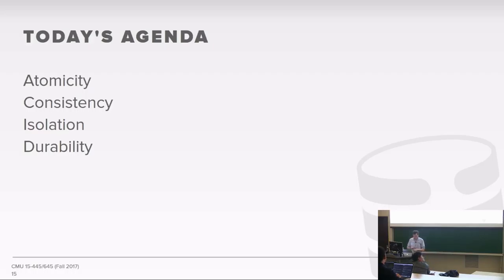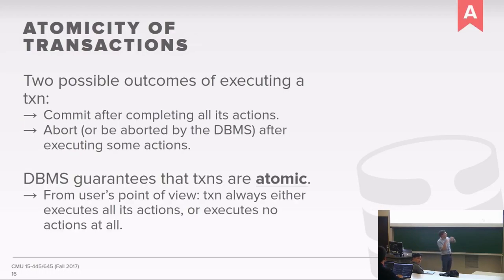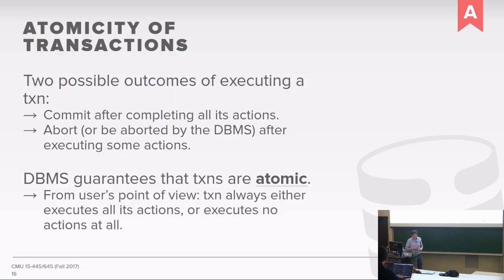For today's agenda we'll go through each of these one by one. We'll spend most of our time on isolation, because that's where you understand transaction schedules. For durability, we'll talk more about logging later in a few weeks. Most of the time is on atomicity and isolation. When we start talking about concurrency control protocols like two-phase locking, timestamp ordering, and index stuff, it'll mostly focus on atomicity and isolation.